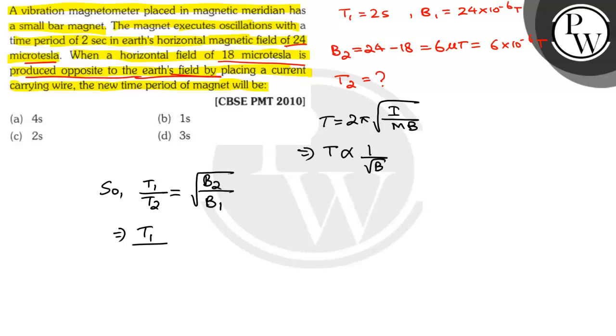T1 by T2 will be equal to root under B2 is 6 into 10 to the power minus 6 and B1 is 24 into 10 to the power minus 6. T1 is given as 2 seconds.